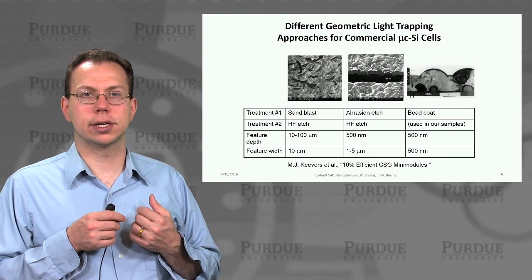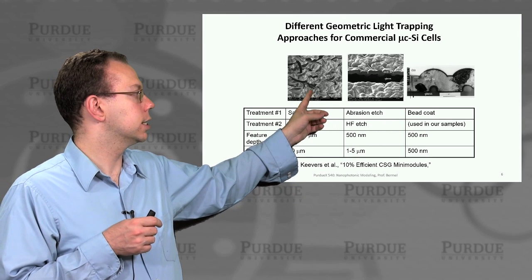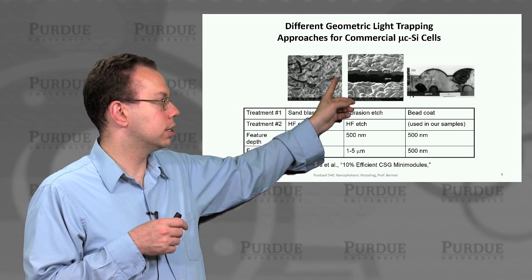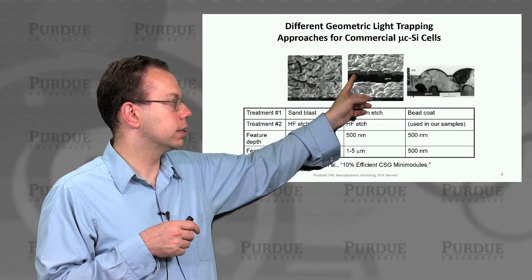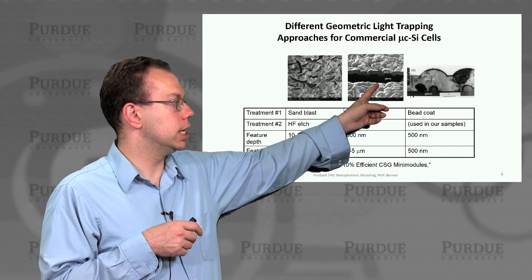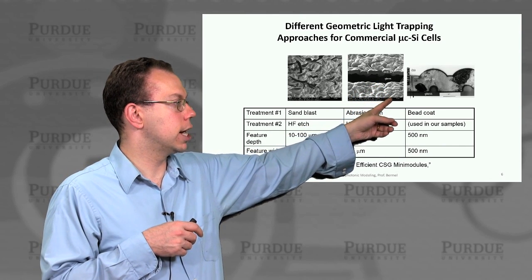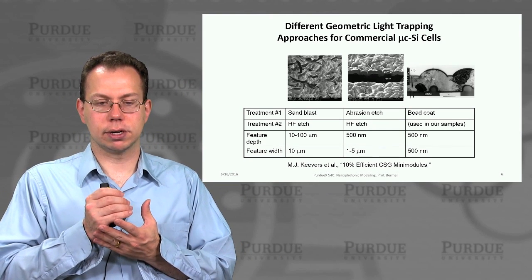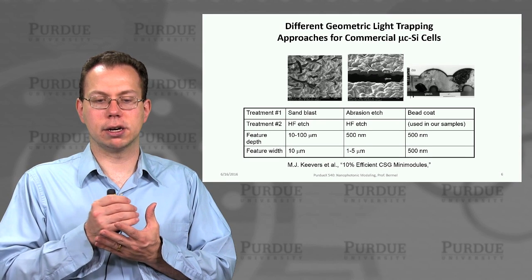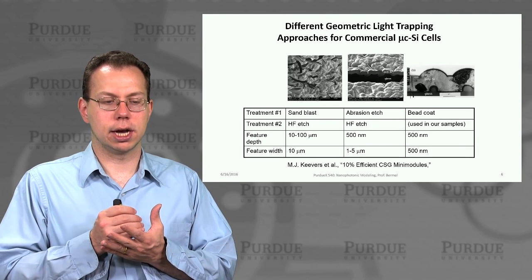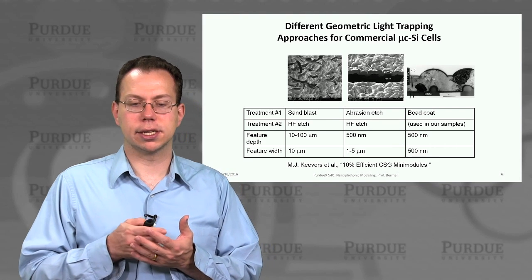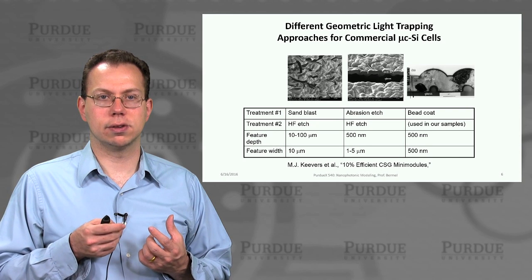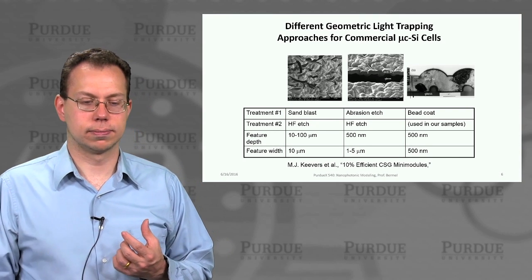Just to show you a few examples of what actual experimental treatments are applied to these microcrystalline silicon solar cells. You can see here, one is sandblasting, which gives you this sort of patterning with very complex features. And then you have abrasion etching, which is a little more uniform, but certainly not exactly periodic. And then you have the bead coating method, where you would basically take silica beads that were some micron, and then put those into a pattern. That's the most periodic of all, and has feature size on the order of 500 nanometer in width and depth. In the next lecture, we'll go into more details about how to simulate these sort of structures.